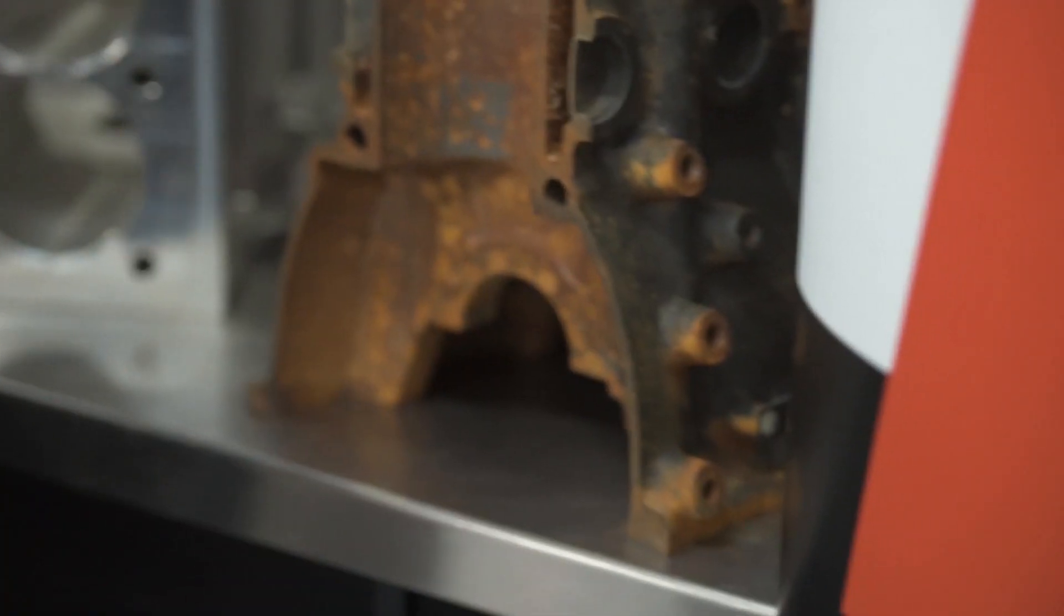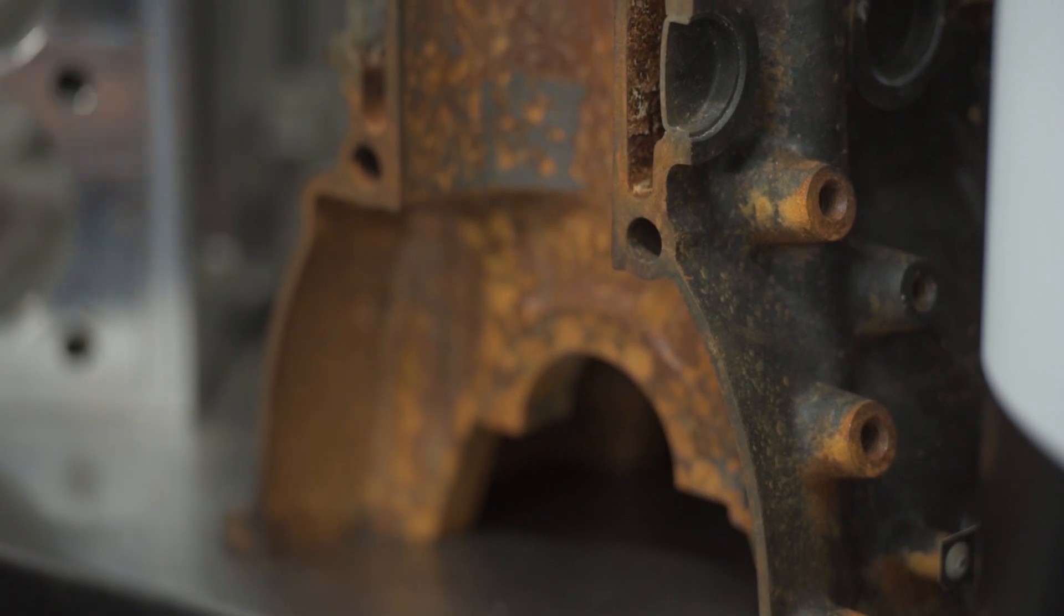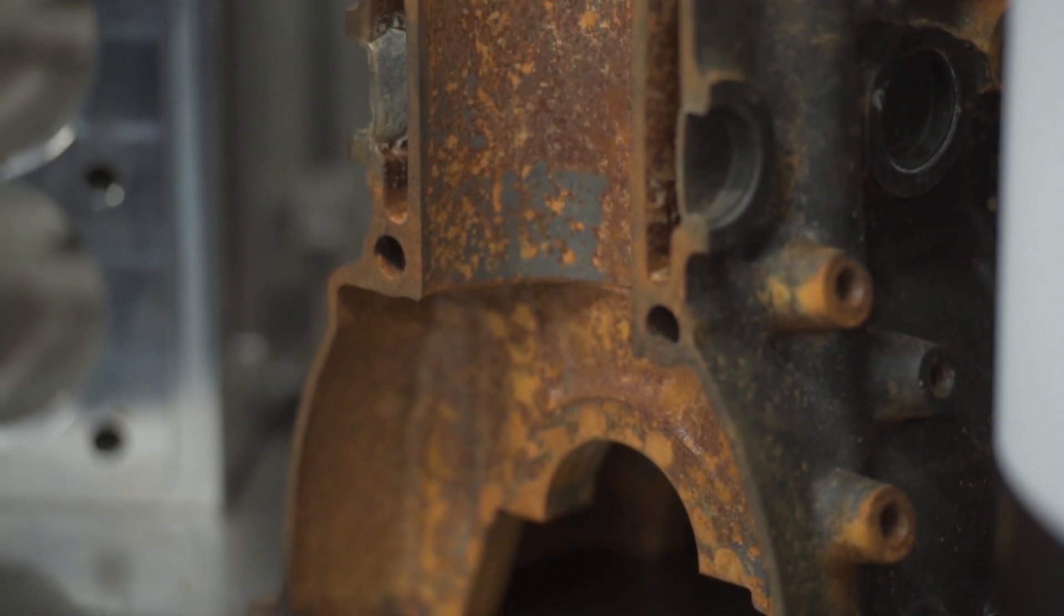Also, if you do have a failure with a conrod and it doesn't happen to take out the side of the crankcase, it might take out the oil gallery, and then you've got a whole heap of other problems trying to repair that. So basically, you're continually trying to band-aid and patch it up.